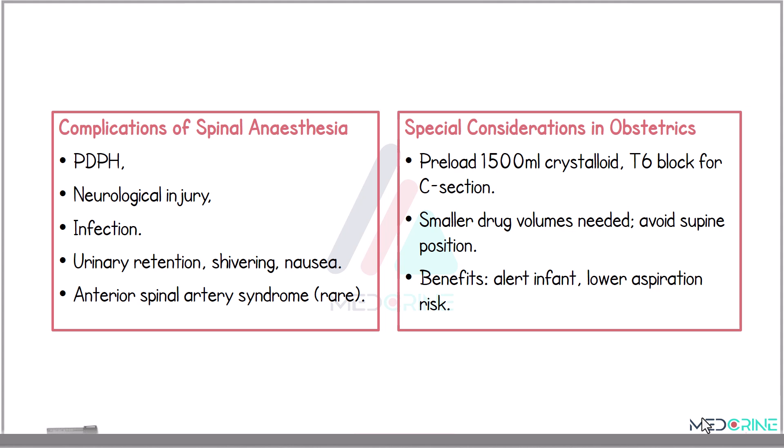Special considerations in obstetric use of spinal anesthesia include preloading with 1.5 liters of crystalloid. A T6 block is required for caesarean sections and a reduced drug volume is used due to physiological changes in pregnancy. Avoid the supine positioning to prevent aortocaval compression. Benefits include a reduced aspiration risk and a more alert patient.